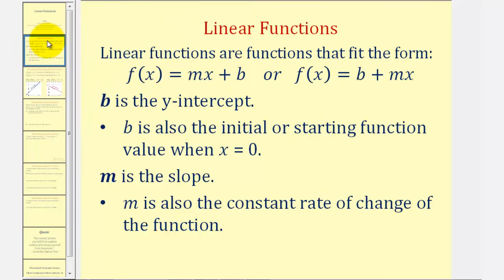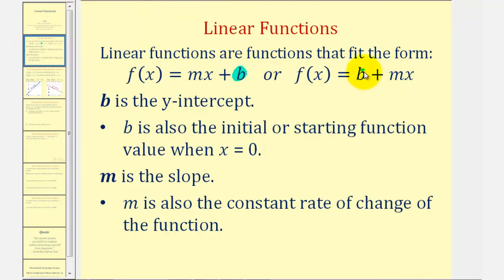Linear functions are functions that fit the form f(x) = mx + b, or equivalently f(x) = b + mx. This form should remind us of slope-intercept form y = mx + b. In either case, b — the constant term — is the y-intercept and the initial or starting function value when x equals zero. And m, the coefficient of x, is the slope of the line and also the constant rate of change of the function.